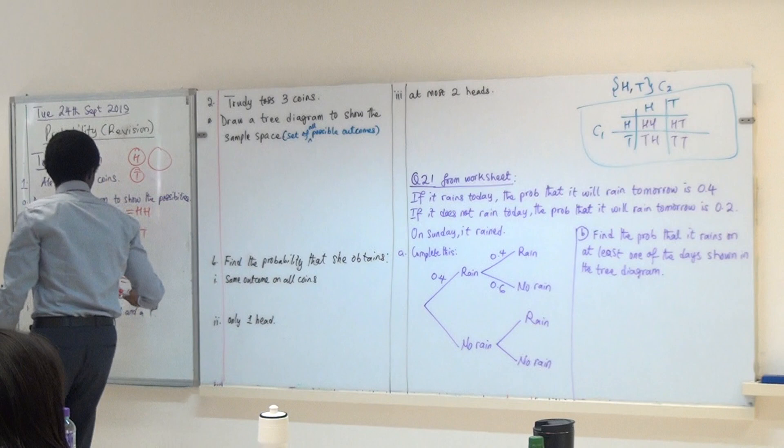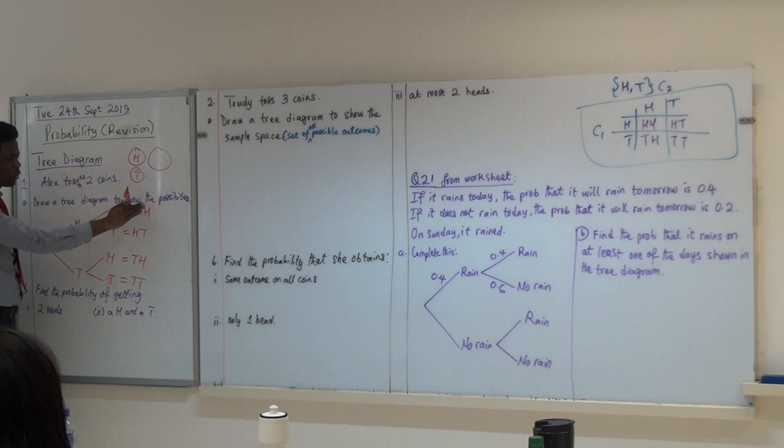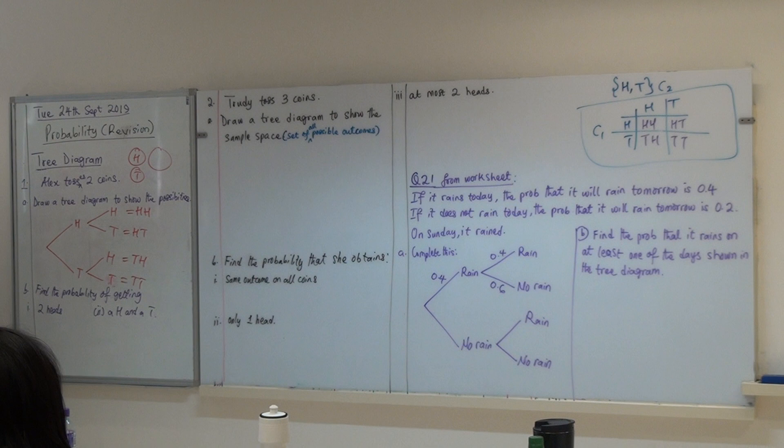So, these four possibilities are also in this table. Okay? And these possibilities, you can't get beyond these possibilities, if you are dealing with two coins. Am I right? This is what we call the sample space. The set of all possible outcomes. Okay?